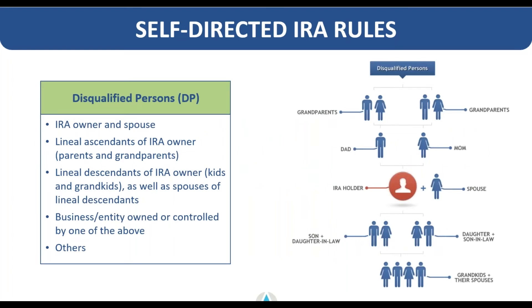Disqualified persons as seen by the IRS is anyone on your lineal descendant or ascendant tree, including your spouse. There are other relatives that are not considered disqualified, such as cousins, nieces, nephews, aunts, uncles, and second cousins — those are not considered disqualified individuals so you could interact with them in a retirement investment capacity. The individuals listed on this chart are the ones you're not able to invest with.